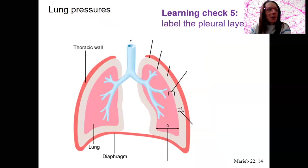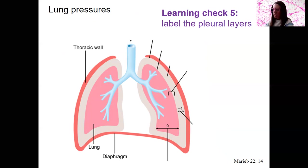Label some pressures here. First, a learning check. Label the pleural layers. Do this as well.